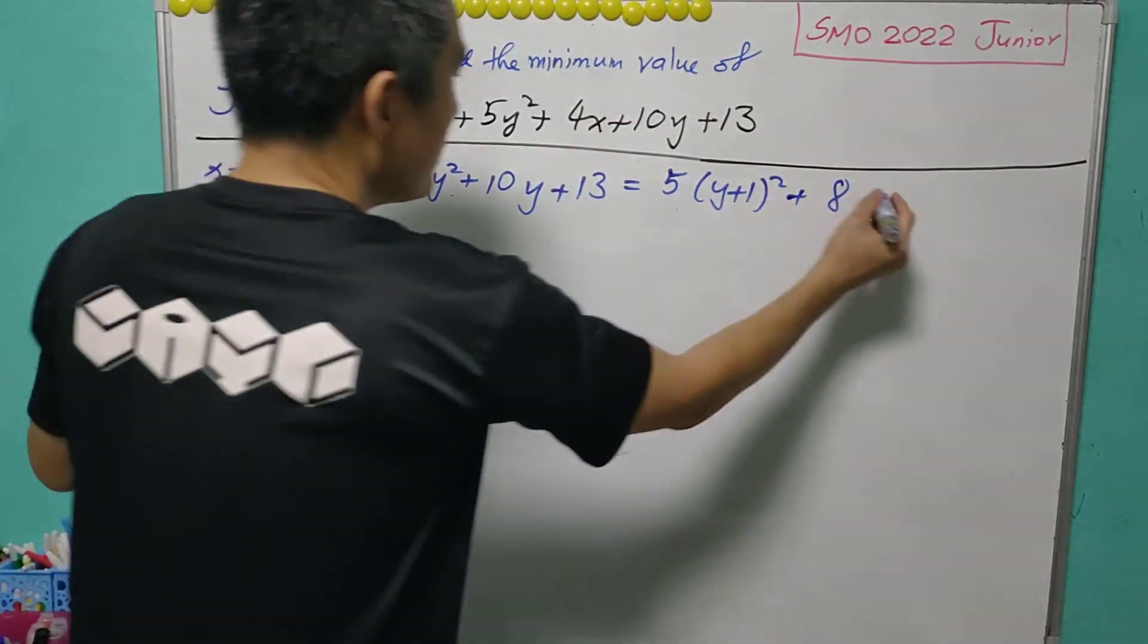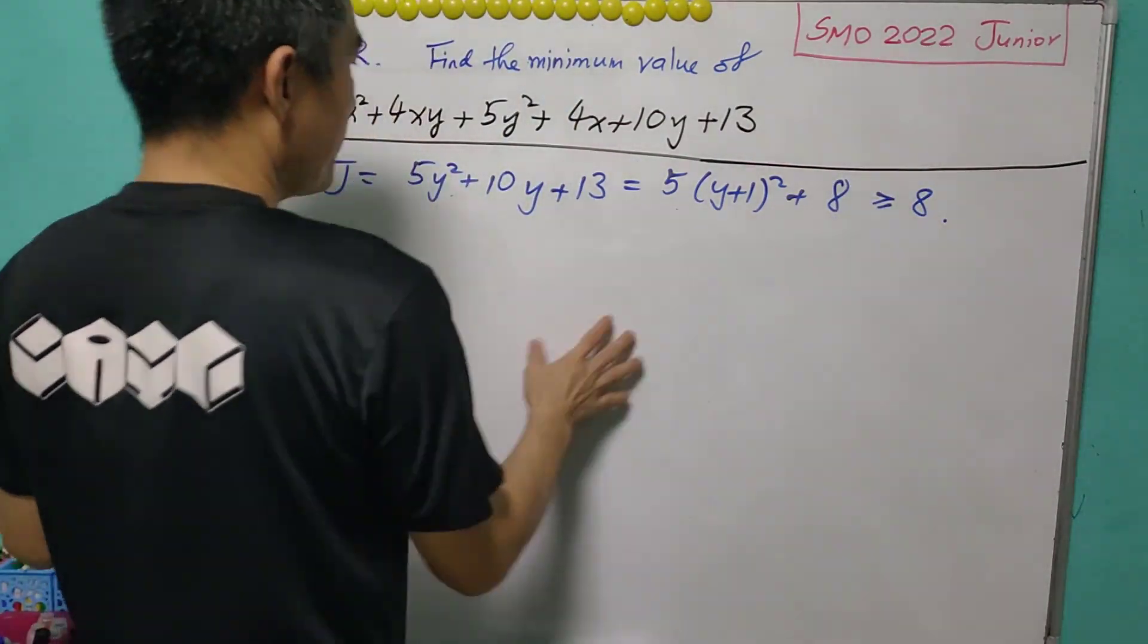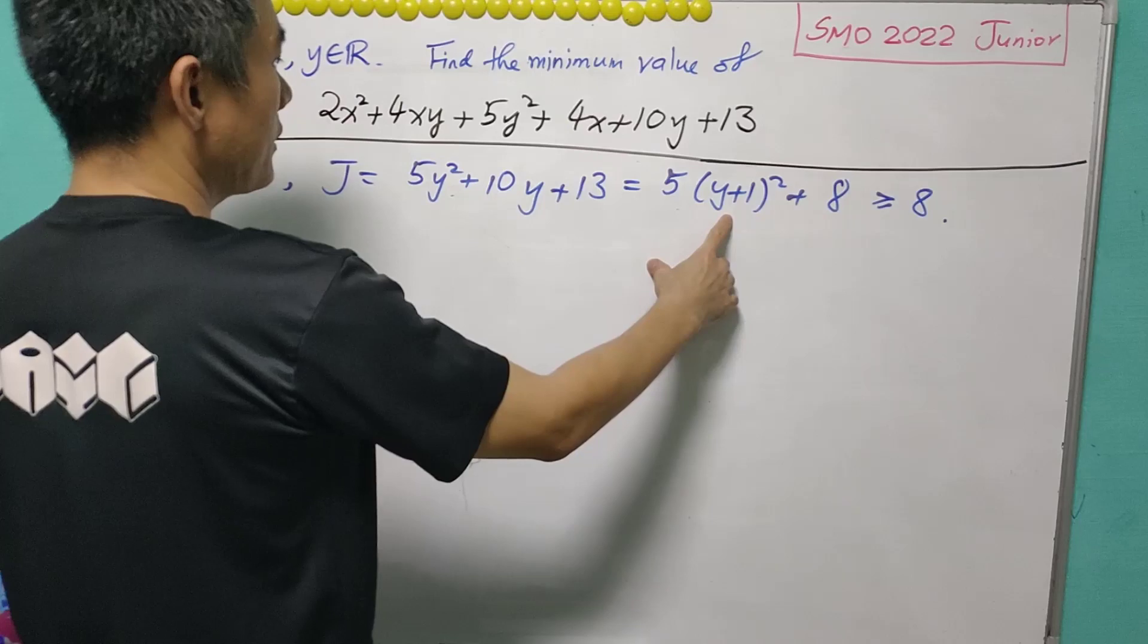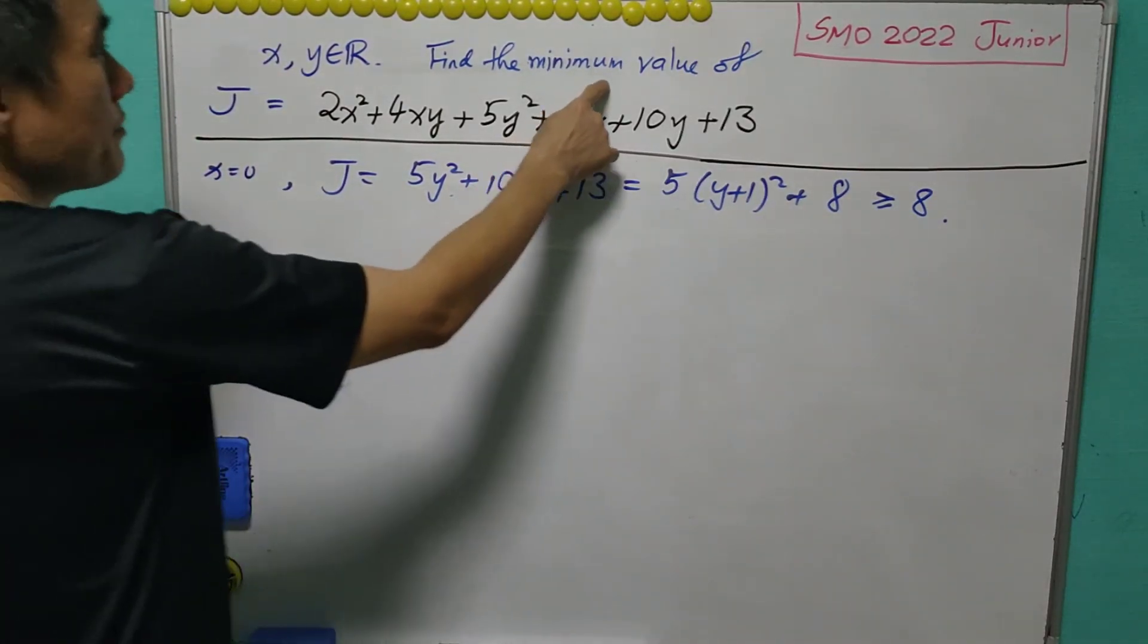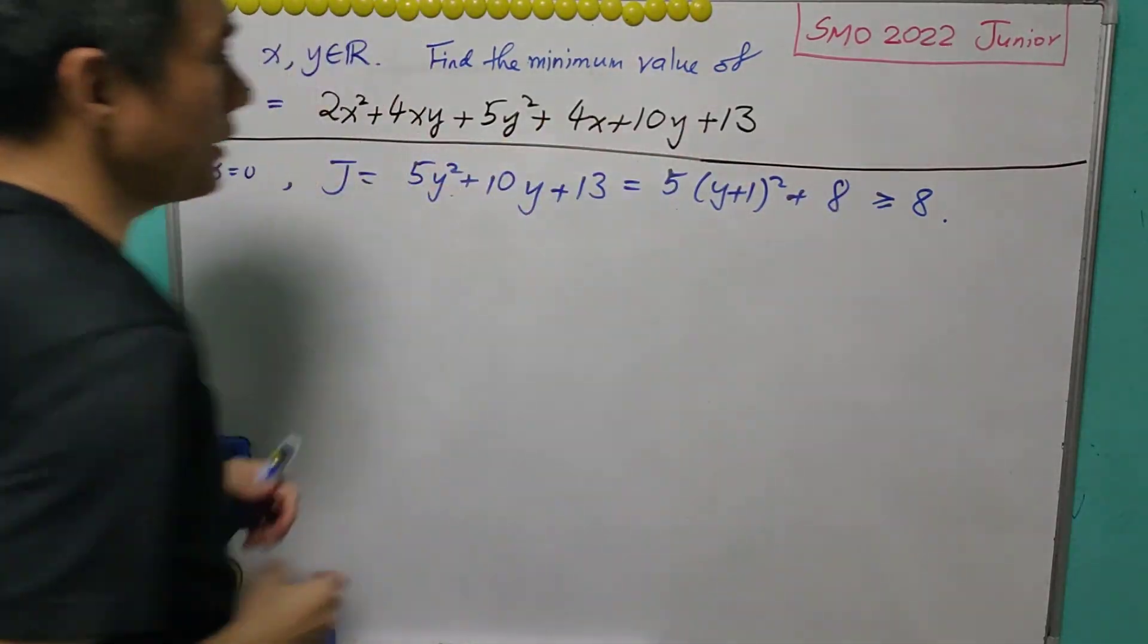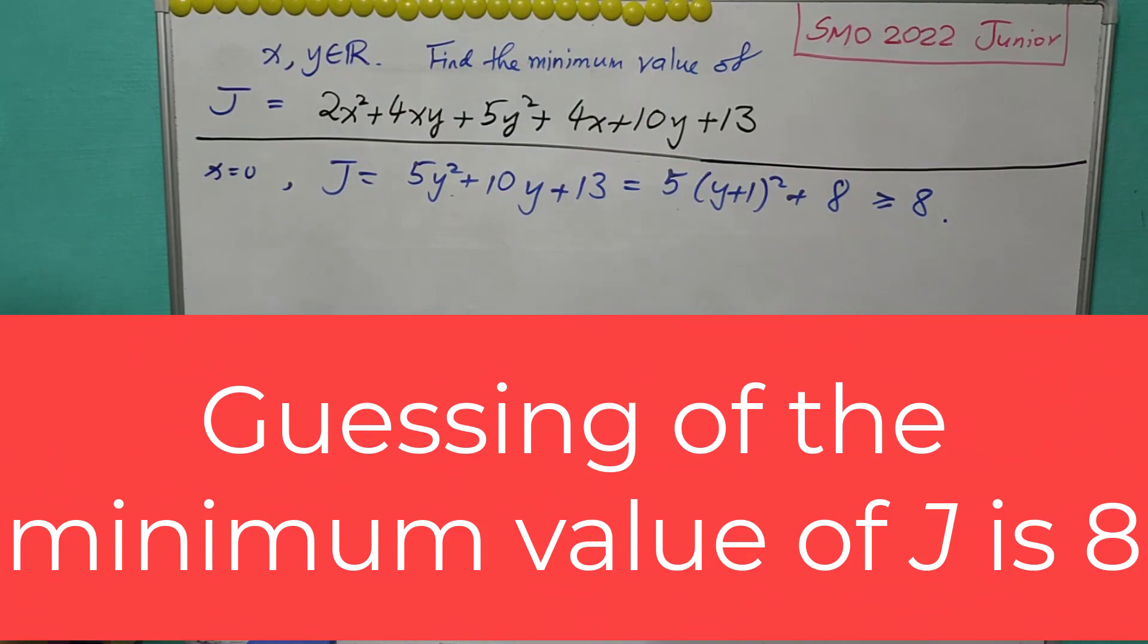And obviously, this is greater than or equal to 8. It is clear that 8 is achievable when y equals to negative 1 and x equals to 0. And hence, the minimum value of J is not more than 8. However, this is just a guessing. So we need to find a more rigorous way to get the answer.